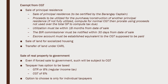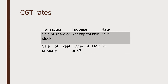As to sale of real property to the government, even if it is a forced sale, it will still be subject to CGT. However, the taxpayer has the option to be taxed using the graduated tax rate or the 8% option, or the taxpayer may choose to be taxed at 6% capital gains. This option is only for individual taxpayers and not available to corporations. For the capital gains tax rates: for the sale of shares of stock, the tax base is the net capital gain (cost deducted), multiplied by 15%. For sale of real property, the tax base is the higher of fair market value or selling price, multiplied by 6%.